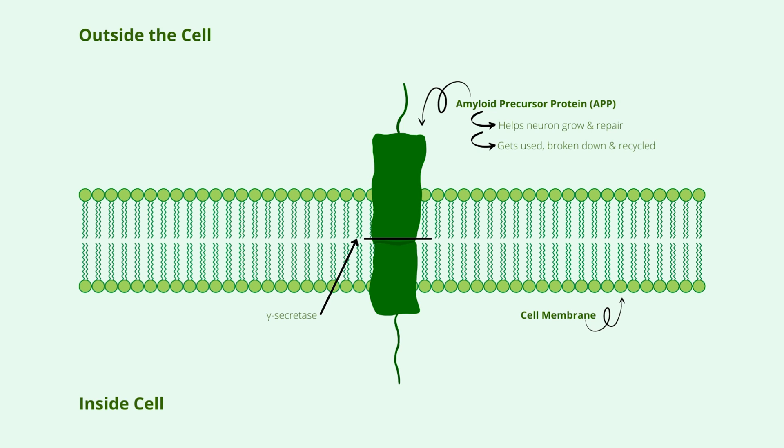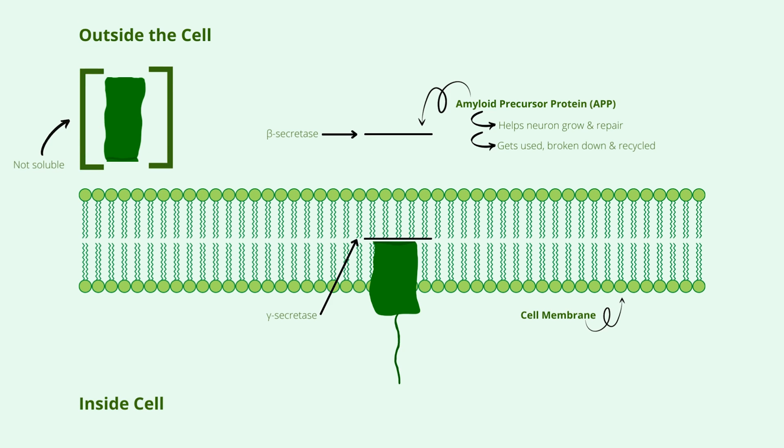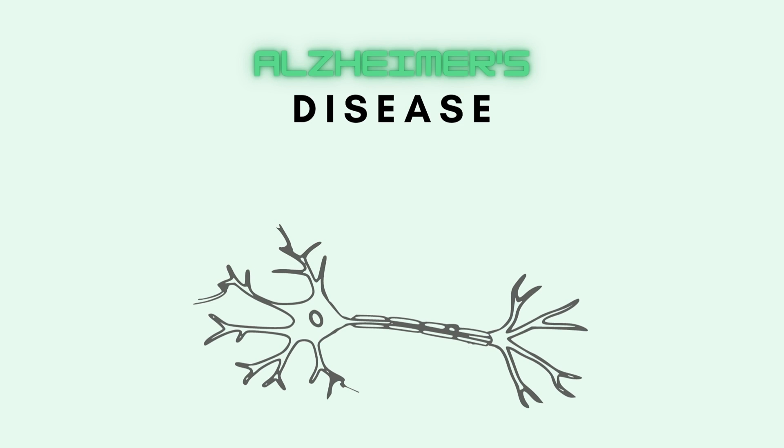However, if another enzyme, beta secretase, replaces alpha secretase instead, we encounter a problem. Beta secretase breaks down APP from a different location, causing the broken peptide to be a non-soluble molecule. This non-soluble unit of protein forms a molecule called amyloid beta. The chemical composition of amyloid beta causes it to be sticky, so they start to bond together just outside the neurons and form what is called beta amyloid plaques.